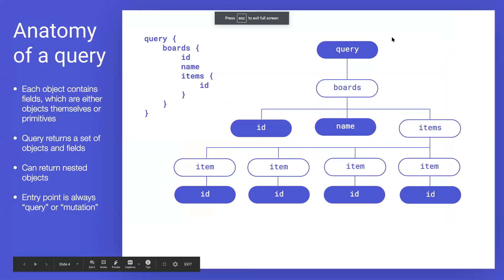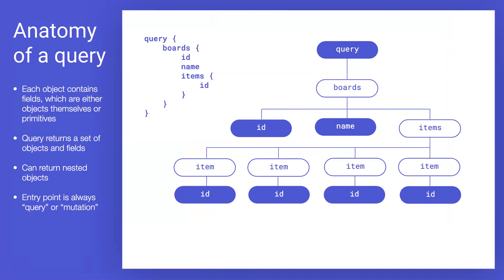GraphQL is an application layer between you and monday.com. It's a little bit different from other APIs such as REST APIs — it's not a set of resource URLs. Instead, it's a layer that you can send a query to, similar to an SQL query. Based on how the query is structured and what you're specifying, you're going to get different pieces of data. Every object in monday.com — whether it's a board, an item, or a group — they all contain fields. An item has an ID, a board has an ID and a name, and it also has items on it.